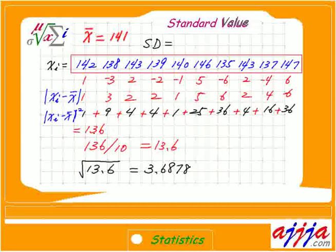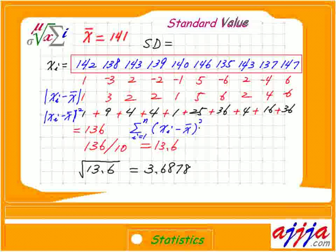To add everything up, we use the capital sigma sign. So sigma from i equals 1 through n — in this case, n equals 10. We write: sum of (x_i minus x-bar) squared. Since we're squaring, the result is always positive anyway, so we don't need to worry about the absolute value sign. Squaring ensures it's positive.